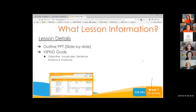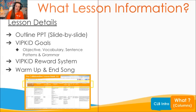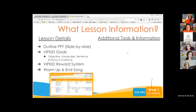Next, we have the VIPKid goals — the objective vocabulary, sentence patterns, and grammar. You know those things you memorized for the mock and then haven't really looked at again? Having them right next to your notes and information in class increases the chances you'll actually implement and focus on those in the classroom. Then we have the VIPKid reward systems — you don't have to do those, but they're included in case you want to use them, and you can track what reward systems you've used with which students. Then we also have the warmup and end songs, so if you want to grab the music or add the ukulele, you can quickly see those without having to enter the classroom or look up the lesson.